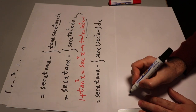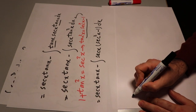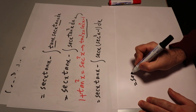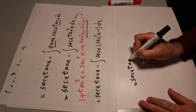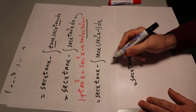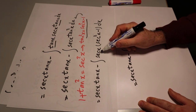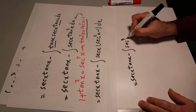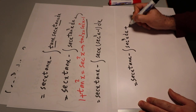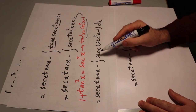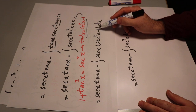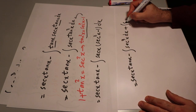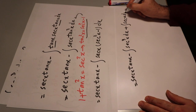And this will be equal to secant x tangent x minus the integral of secant x times secant²x — that will be secant³x dx — plus secant x times minus 1, which is minus secant x, giving a positive secant x dx term.